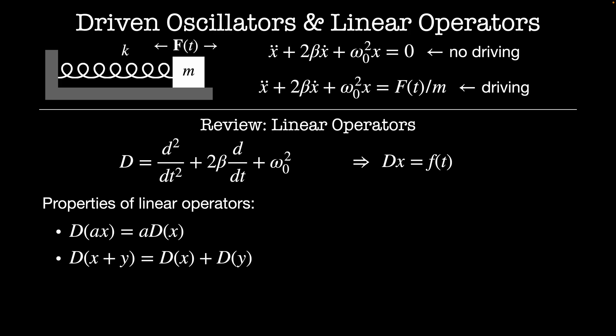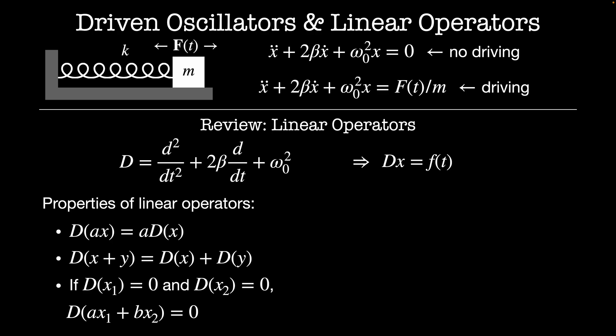Combining these two properties, we arrive at another property called superposition, which is used in virtually all fields of physics. Imagine I have two solutions x1 and x2 that both solve D of x equals zero. We can use this to construct an even more general solution: D acting on a times x1 plus b times x2 is equal to zero. Specific solutions in this superposition are weighted sums of all possible linearly independent solutions to this linear operator.